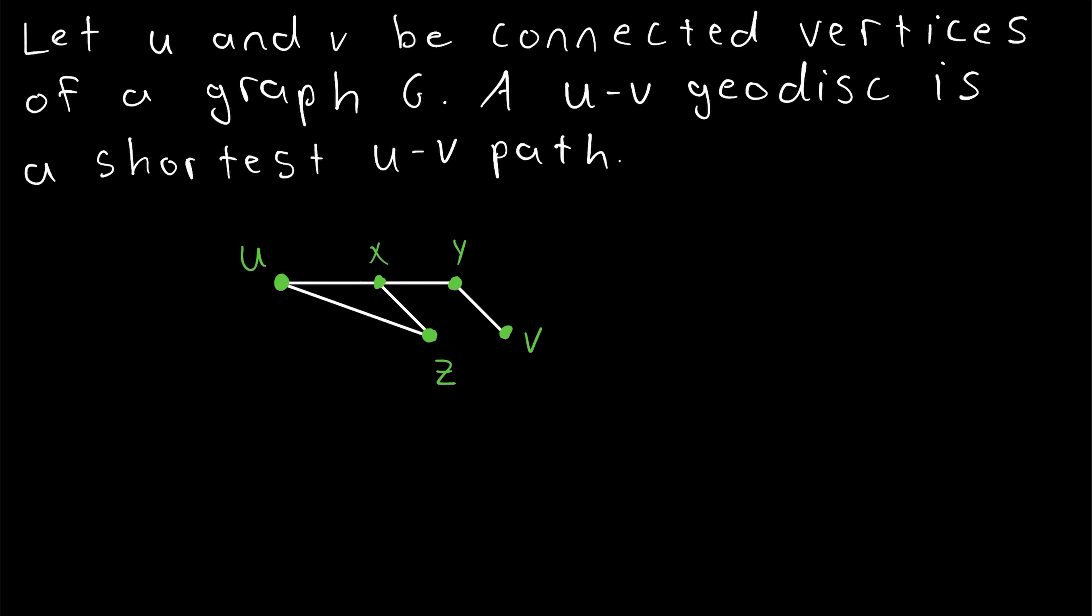I did a video a while ago on the distance between two vertices. I'll leave a link to that in the description. I talk about geodiscs in that video as well. So let u and v be connected vertices, which just means there's a path connecting them, of a graph G. Then a u-v geodisc is a shortest u-v path. So a u-v geodisc is a u-v path whose length is the distance between u and v.